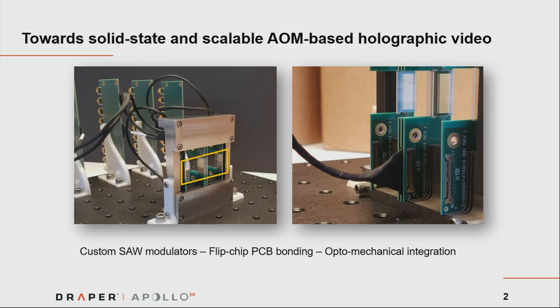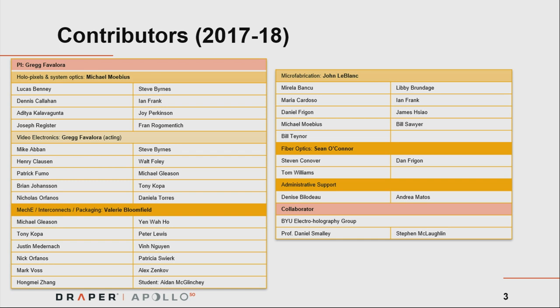This talk is bringing us towards solid-state and scalable AOM-based holographic video. By scalable, I mean technologies that would allow you to make an electronic hologram as small as a mobile phone, as large as a desktop device, or even wall-mounted. This type of AOM technology has shown promise at places like the MIT Media Lab and Brigham Young University, in groups run by Daniel Smalley, Michael Bove, and others. This is a discussion of three elements of an upcoming prototype display, and I assume a reasonable proportion of the audience already knows about holographic stereograms and parallax panoramograms.